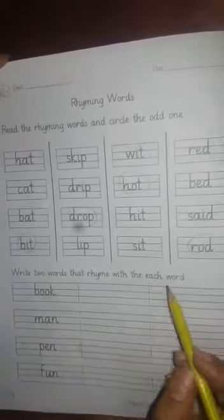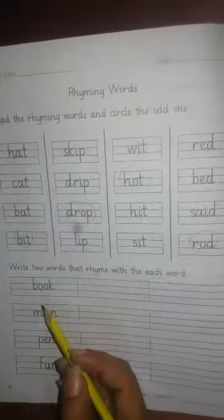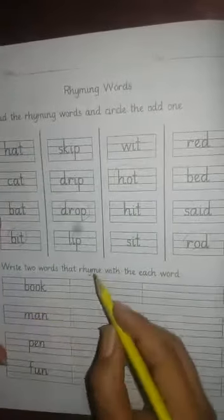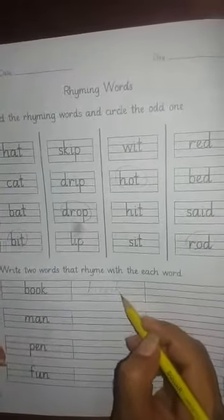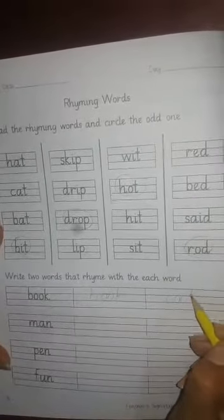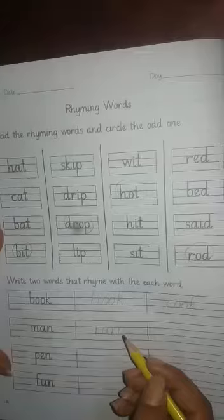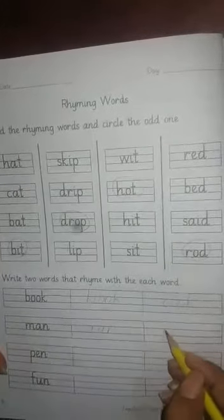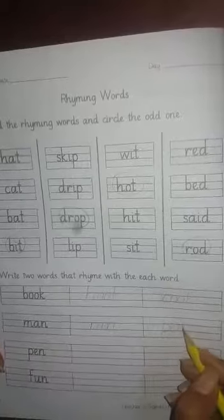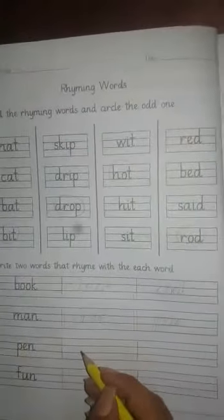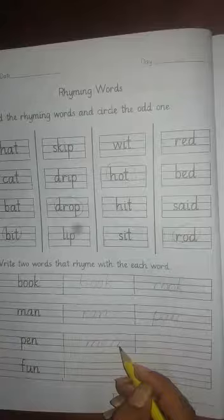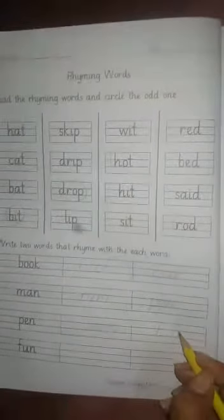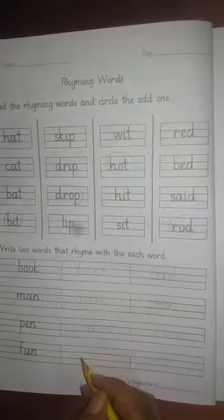So students, here we write the two words that rhymed with each word. So start: book, hook and cook. Now man, ran and pen. Pen, men and hen. Now fun, run and son.